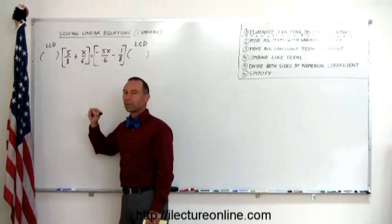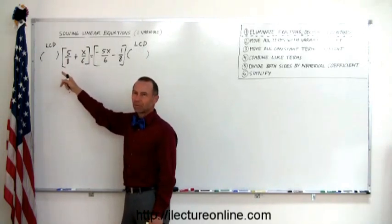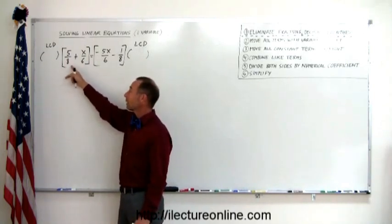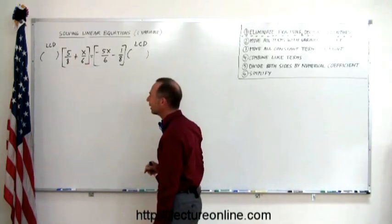You can find it by doubling the big one and see if the small one fits into it. For example, 2 times 8 is 16. Well, 6 doesn't go into 16. Then you try tripling 8. So 3 times 8, 24. Ah, 6 goes into 24 as well. There's my lowest common denominator.